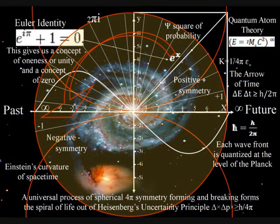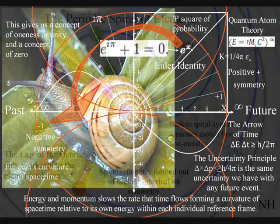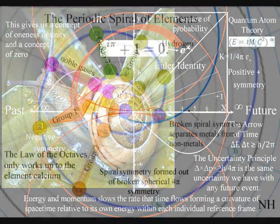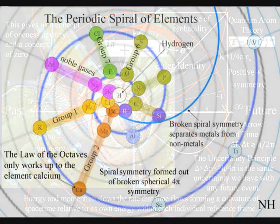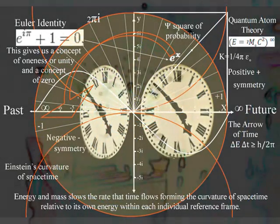This process is totally universal and interactive, from the largest object to the smallest creature, right down to the smallest element of the periodic table, will slow the rate that time flows, forming a curvature of space-time relative to its own energy or mass.